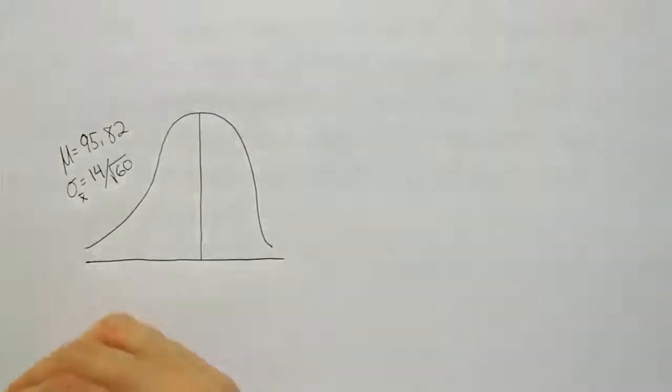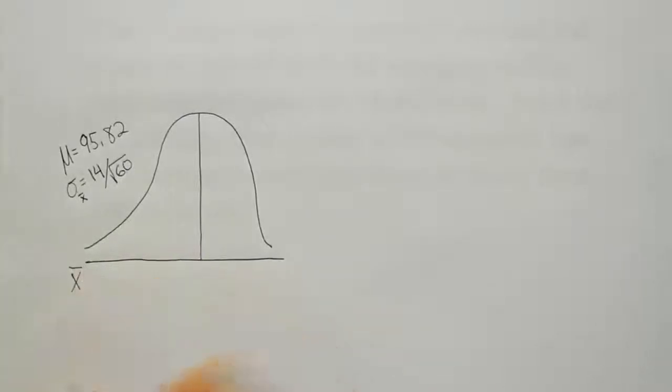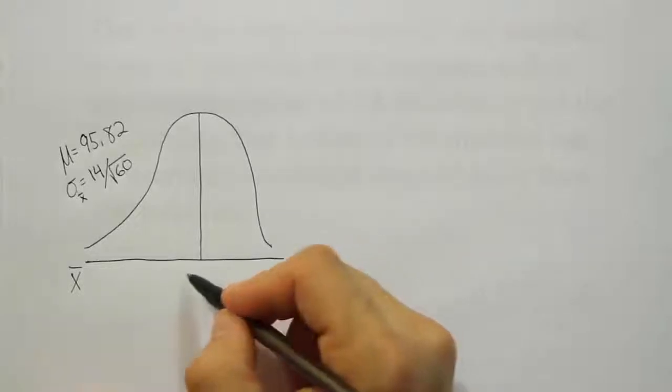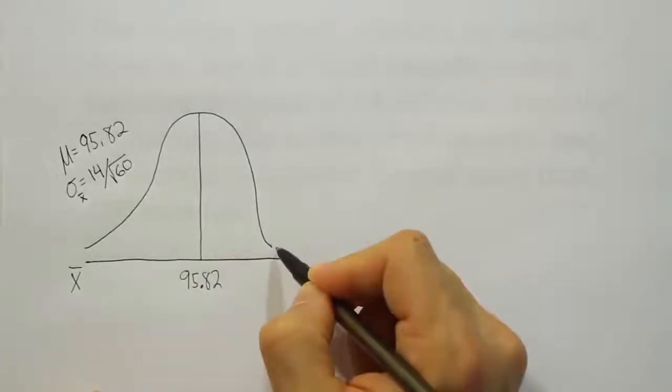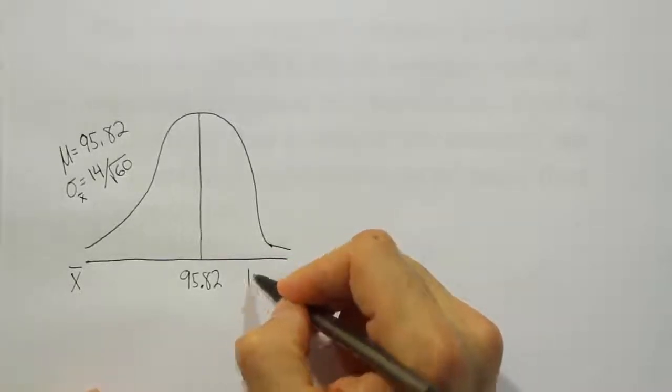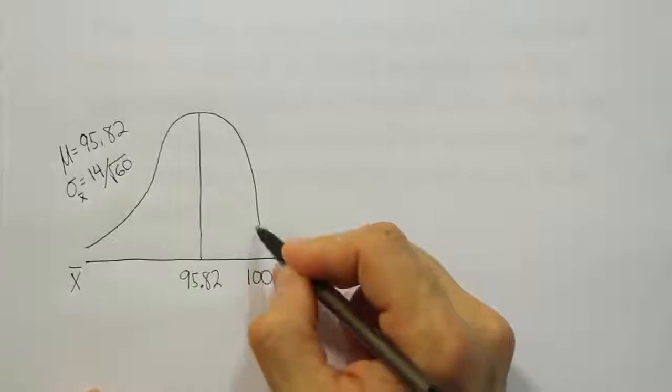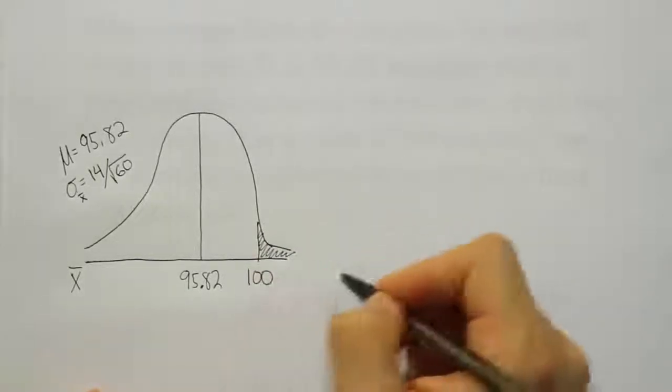And then we're looking for the probability that it would take a class of 60 students an average of more than 100 minutes. So we're dealing with the average, so this line down here is now called x bar. The mean is 95.82 minutes, and we're looking for the probability that it would take a class more than 100 minutes. So 100 is on the right-hand side of 95.82, so we're looking for the probability the values are greater than this.